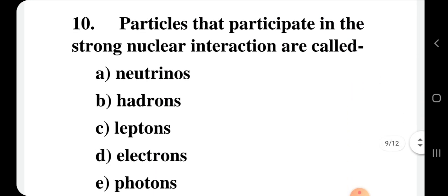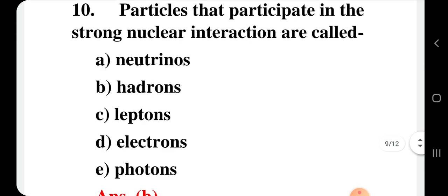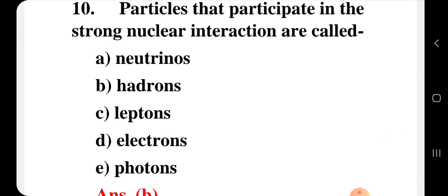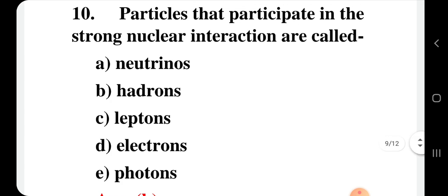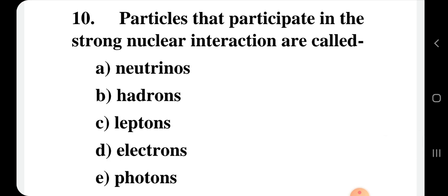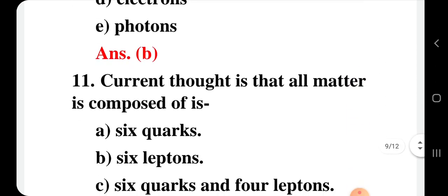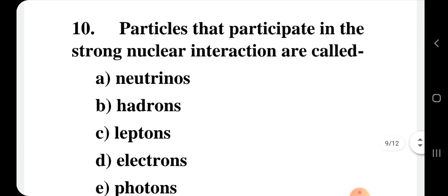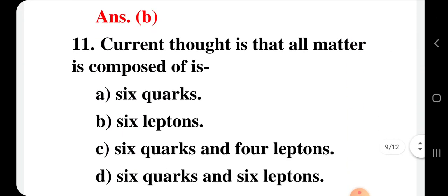Question number 10: Particles that participate in the strong nuclear interaction are known as — you should know that gluons were mentioned as carrier particles for the strong force, and they belong to hadrons. So particles that participate in strong nuclear interaction are hadrons. The correct option for question 10 is option B: hadrons.